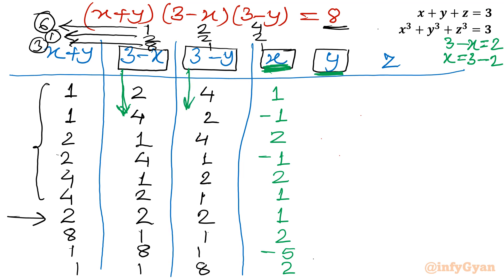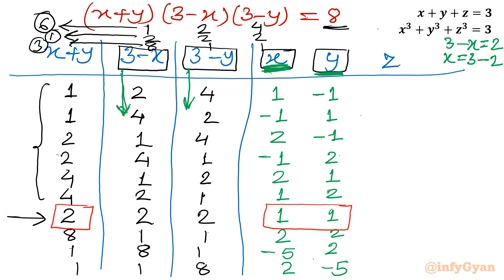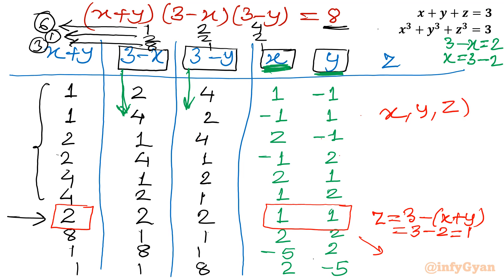The y values are: 3-1=2, 3-4=-1, 3-4=-1, 3-1=2, 3-2=1, 3-2=1, 3-1=2, 3-8=-5, 3-2=1. We check each row by verifying that x+y matches the first column value. Only one row passes this check from the positive factors: the 2,2,2 case gives x=1, y=1, and z = 3-(x+y) = 3-2 = 1. So the triplet is (1, 1, 1).